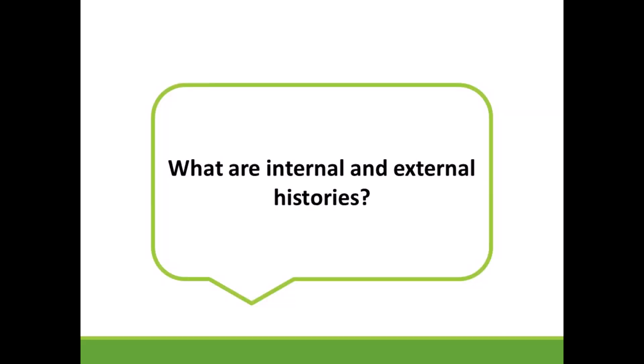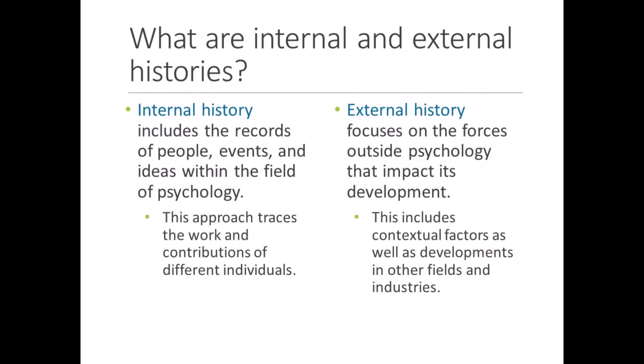What are internal and external histories? To learn about a person or event, historians collect both internal and external histories. An internal history is directly relevant to the history of a specific person, event, or idea — for example, we could trace the development of a single theory over time. An external history focuses on factors that are indirectly relevant to the topic of interest, gathering information about the broader social, cultural, political, economic, and intellectual factors that influence the topic. To understand why a theory developed the way it did, we would explore the zeitgeist, or the spirit of the times. Later in this lecture series, you'll learn how the early theories of intelligence were shaped by eugenics and the belief that intelligence is determined at birth by one's genes.